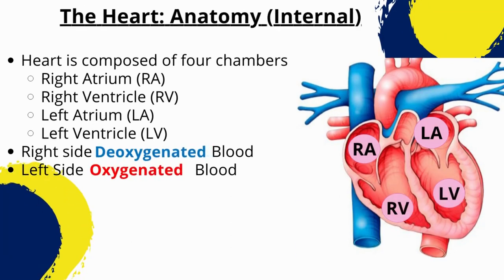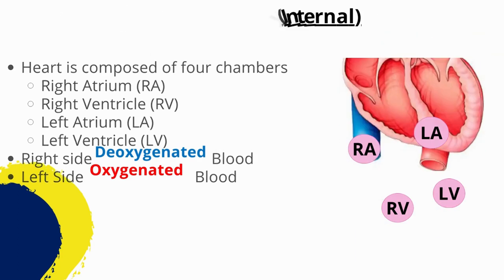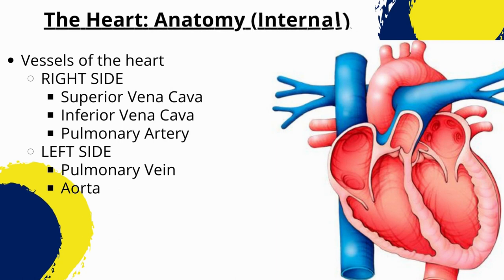Internally, the heart is divided into four chambers: the right atrium and right ventricle, and the left atrium and left ventricle. The atria are the upper chambers, responsible for receiving blood from the body, while the ventricles are the lower chambers, responsible for pumping blood to the body and lungs. The superior vena cava (SVC) is a large vein in the chest that returns deoxygenated blood from the upper body — including the head, neck, arms, and upper torso — back to the right atrium of the heart.